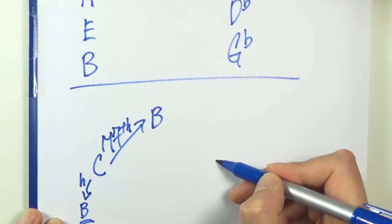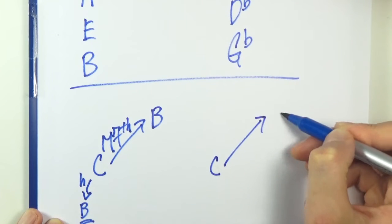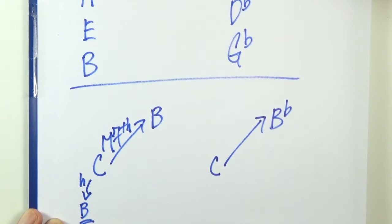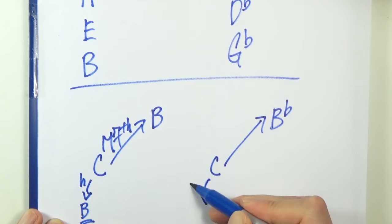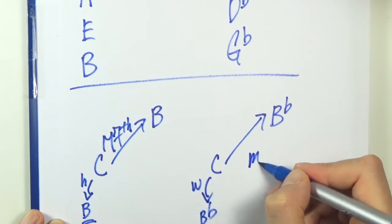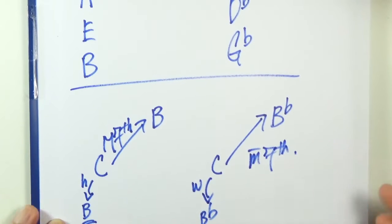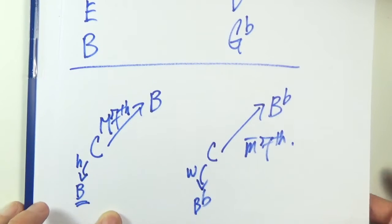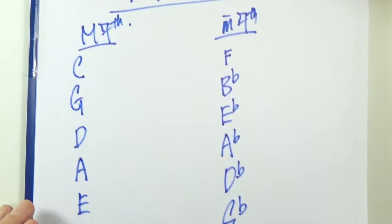If you want a minor 7th, in this case it's actually a Bb. You just go backward by a whole step. That should be your minor 7th.